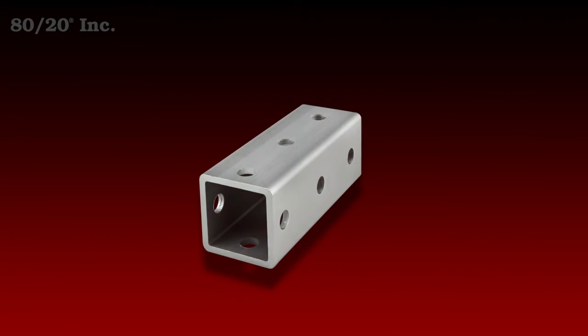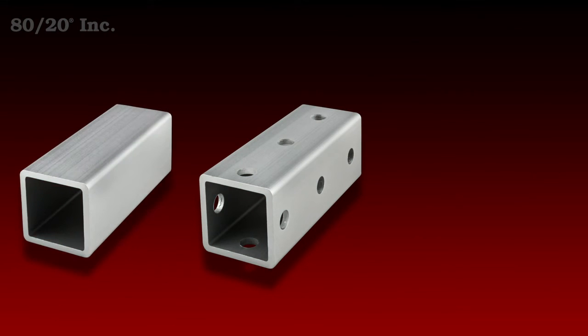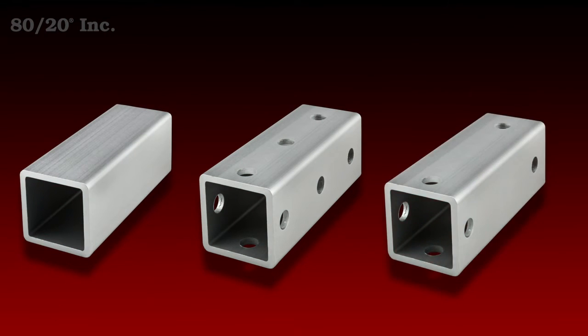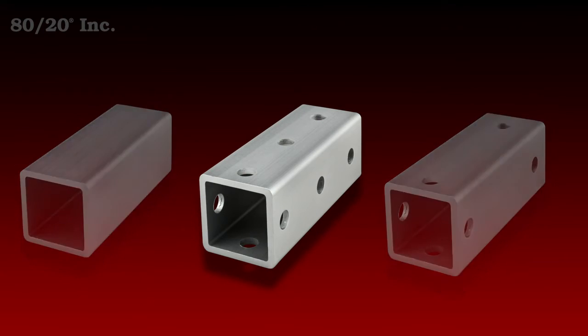These bars come standard with through holes every inch and a half, but they can also come smooth or with machined holes in specific locations. Today we're going to use the pre-drilled hole placement.